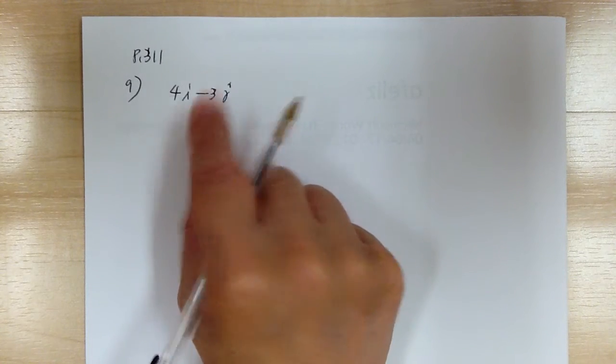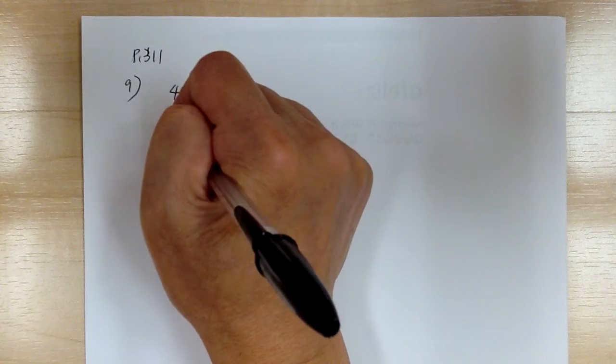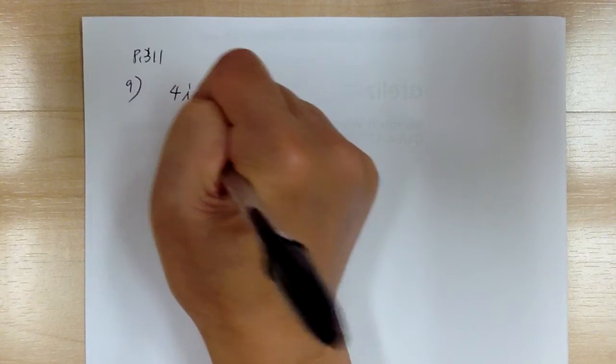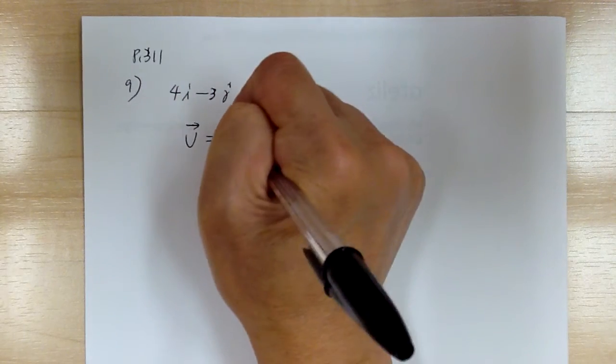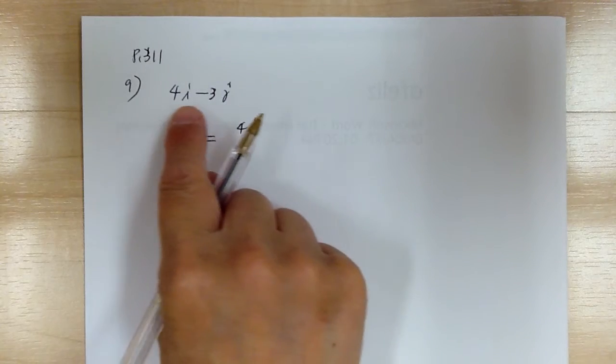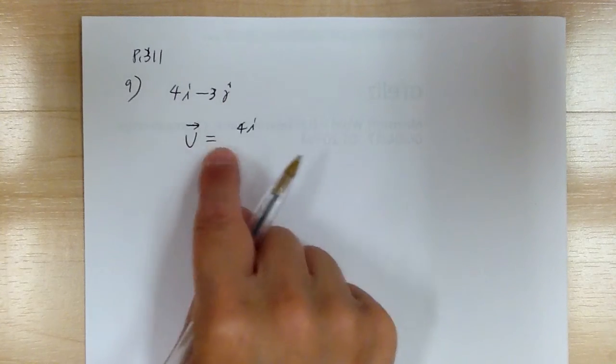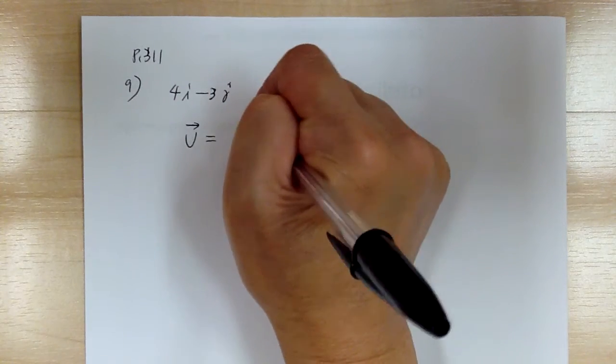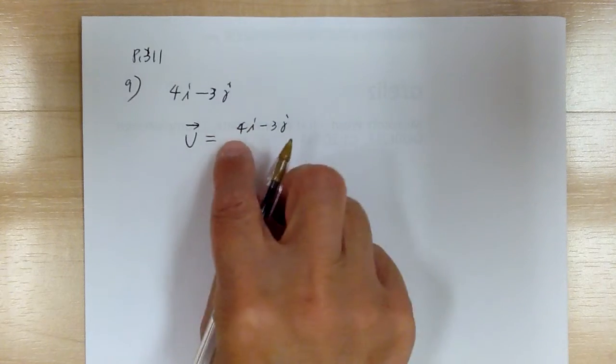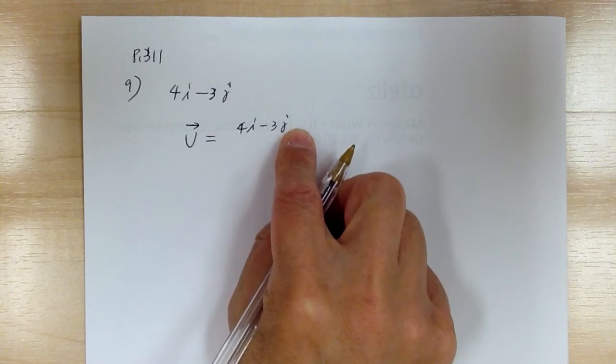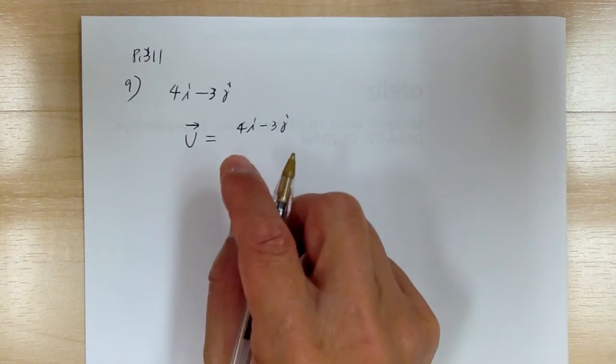So what you need to do is first you need to get the correct direction. The unit vector is equal to, first let's get the correct direction. Again, unit vector means having the same direction as the given vector. So that takes the direction, but this is the wrong length. Next you have to get the correct length.